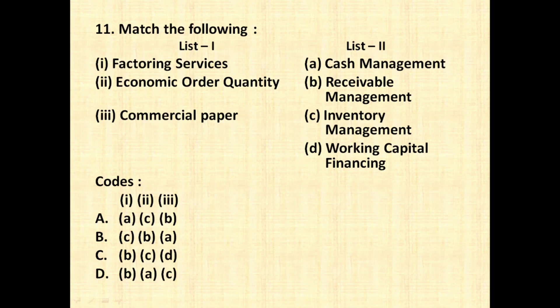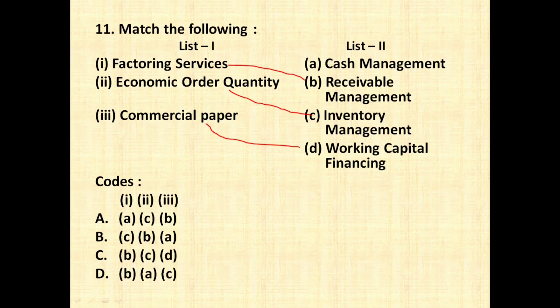Factoring services, as we discussed in the last video, is a receivable management technique. Economic Order Quantity (EOQ), which all of us have studied, is an inventory management technique. Commercial paper, as I explained in the last class, is raised by cash-poor companies as a working capital finance technique. So the correct answer will be: first B, second C, and third D — that is option number C.